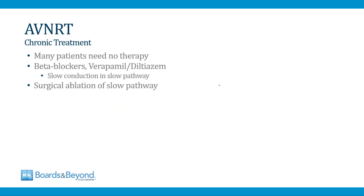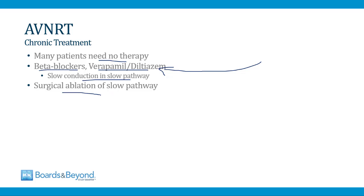Any patient with dual pathways and AVNRT can have the arrhythmia return, though for many patients it happens very infrequently and is not much of a problem. Most patients with infrequent episodes need no therapy. But if patients are having recurrent episodes, you can give a beta blocker or a calcium channel blocker like verapamil or diltiazem, which slow conduction in the slow pathway making it harder for the arrhythmia to develop. For refractory AVNRT, there is a surgical procedure where the slow pathway is identified and ablated, eliminating the dual pathways and making the arrhythmia go away.